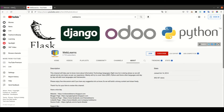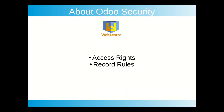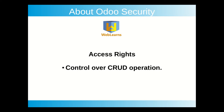So let's get back to our main topic: what is security? Here we have two things we need to focus on and understand. The first one is access rights and the other is record rules. In access rights, we have control over the CRUD operations — for a specific user you can provide read-only access, or they can only create records, or they can delete or update a specific record.